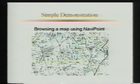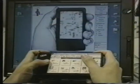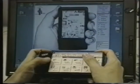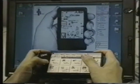Here is an example of browsing a map. The user can look around the map by quickly switching between scrolling, pointing, and clicking with one finger.